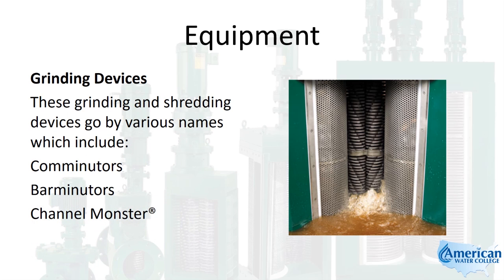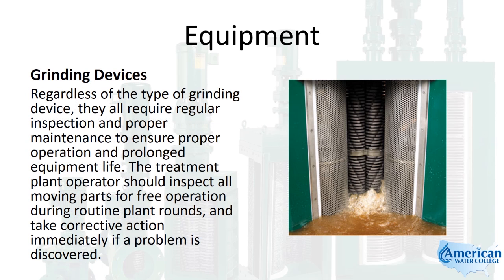These grinding and shredding devices go by various names, including comminutors, barminutors, and the channel monster. Regardless of the type of grinding device, they all require regular inspection and proper maintenance to ensure proper operation and prolonged equipment life. The treatment plant operator should inspect all moving parts for free operation during routine plant rounds and take corrective action immediately if a problem is discovered.